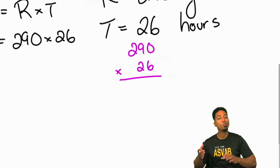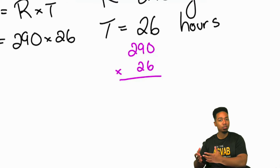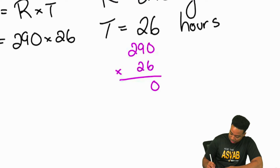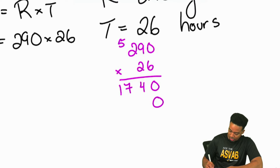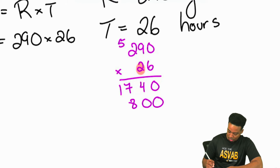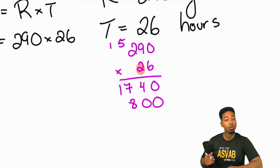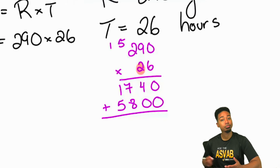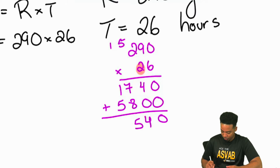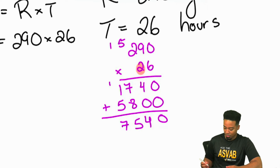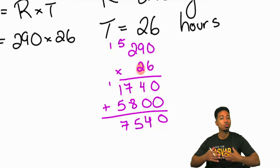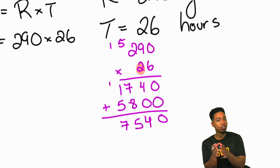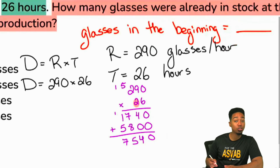Big numbers multiplying — don't worry, trust your instincts, trust the practice you've done. 0 times 6 is 0; 9 times 6 is 54, carry the 5; 2 times 6 is 12, carry the 5 is 17. Next line focusing on the 2: 0 times 2 is 0; 9 times 2 is 18; 2 times 2 is 4, carry the 1 is 5. Adding back: we get 7,540. So what that tells us in terms of distance equals rate times time is that the amount achieved in these 26 hours is 7,540 glasses.